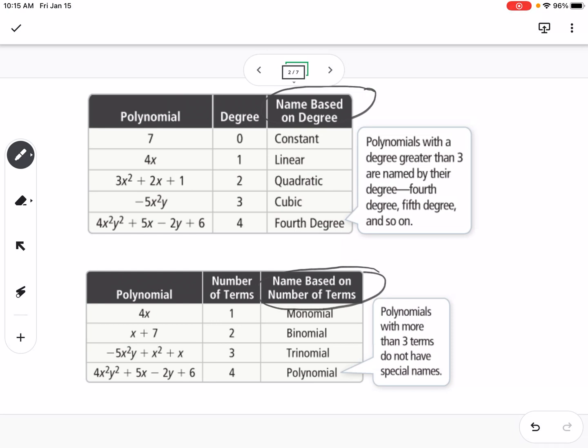You can see a polynomial that has one term, like 7, has a degree 0 because there's no variable. We call that a constant function. If the degree is 1, like 4x to the first power, remember it's understood that it's to the first power, that's linear.